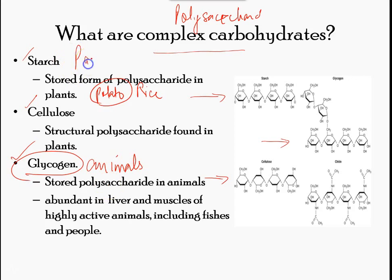Glycogen is the storage form of glucose in humans and other vertebrates and is made up of monomers of glucose. Glycogen is the equivalent of starch in animals and is a highly branched molecule, usually stored in muscle cells. Whenever glucose levels decrease, glycogen is broken down to release glucose.